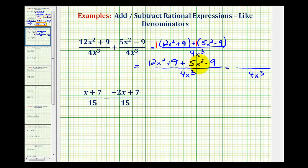We have 12x² + 5x², that would be 17x². And notice we have a positive 9 minus 9, that would be 0. So we have 17x² over 4x³.